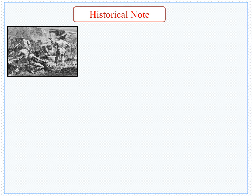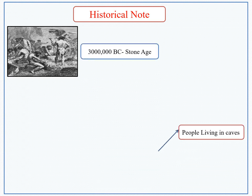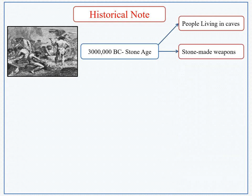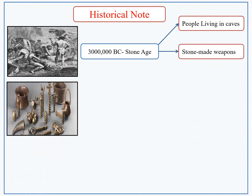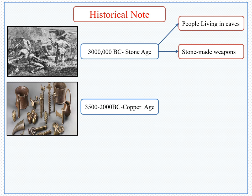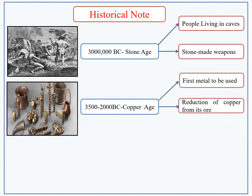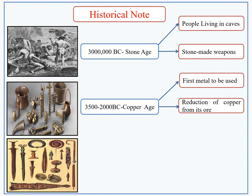In historical notes, starting from the Stone Age: in this age, people used stone-made weapons while they were living in caves. The existence of this age was about 3,000,000 BC. The next one is the Copper Age, which existed from 3500 to 2000 BC. The first metal, copper, was used in this age, and the reduction of copper took place in this age.